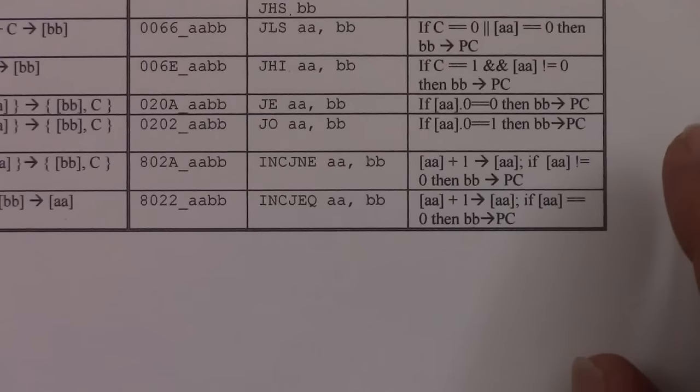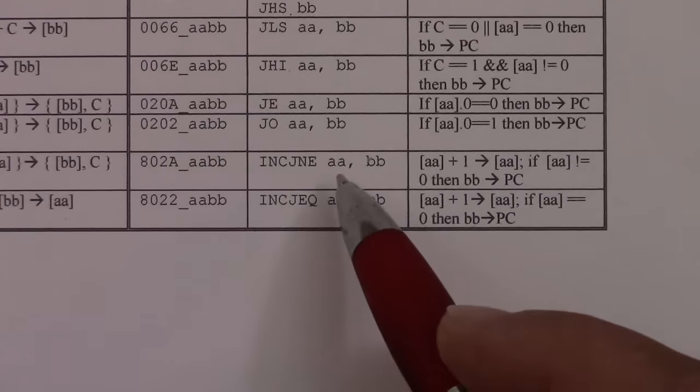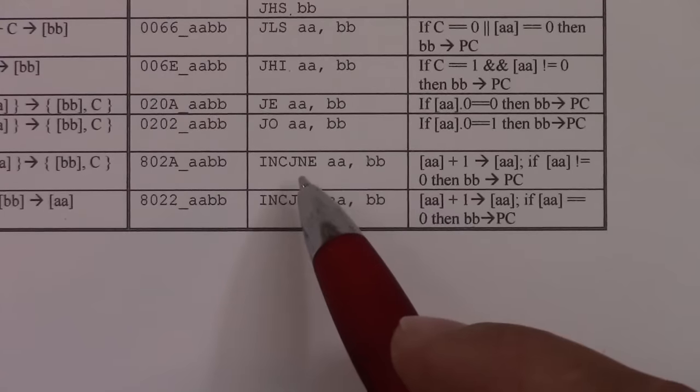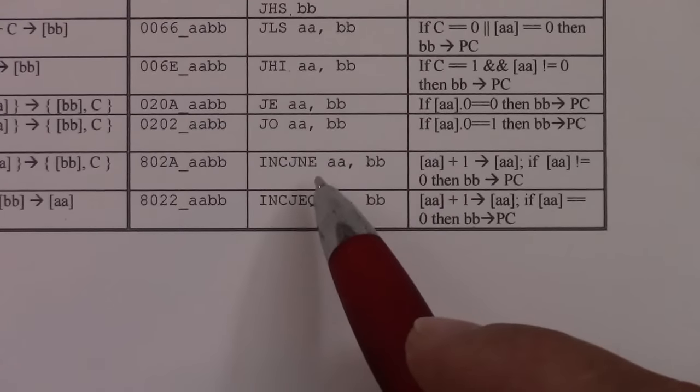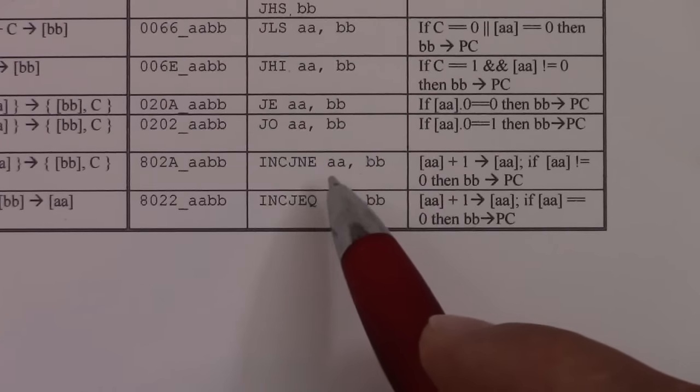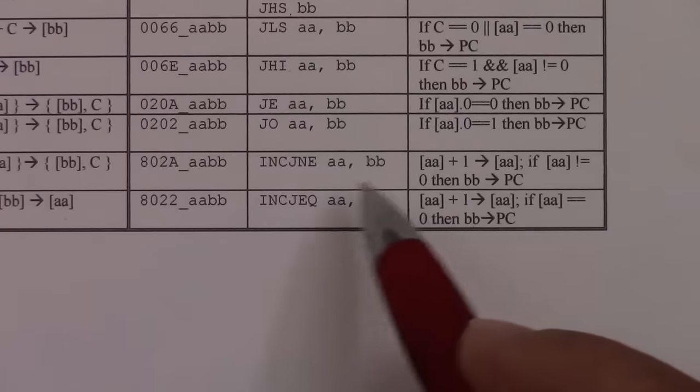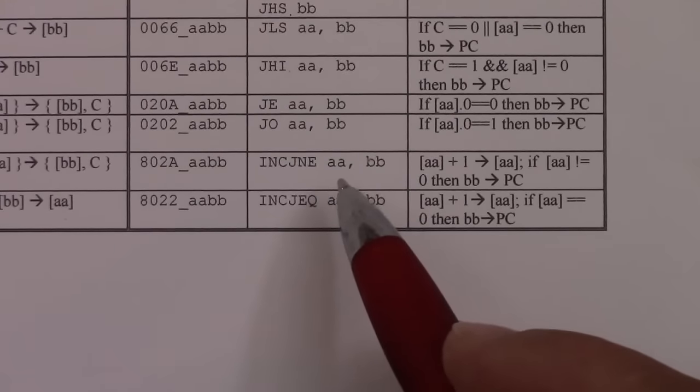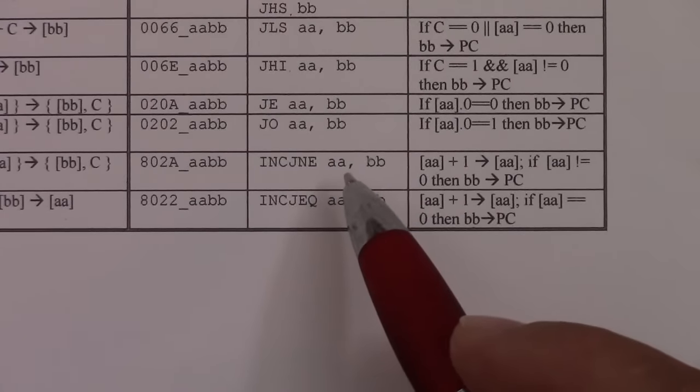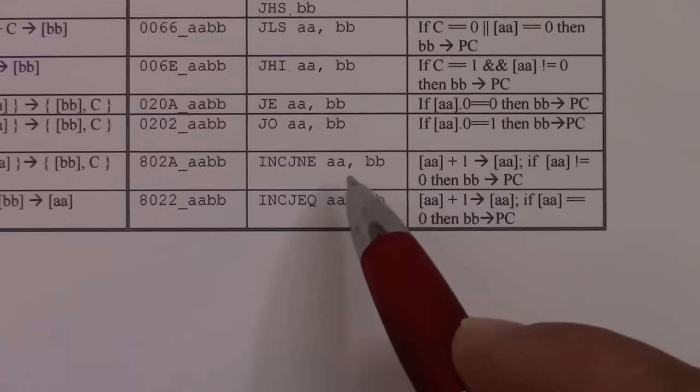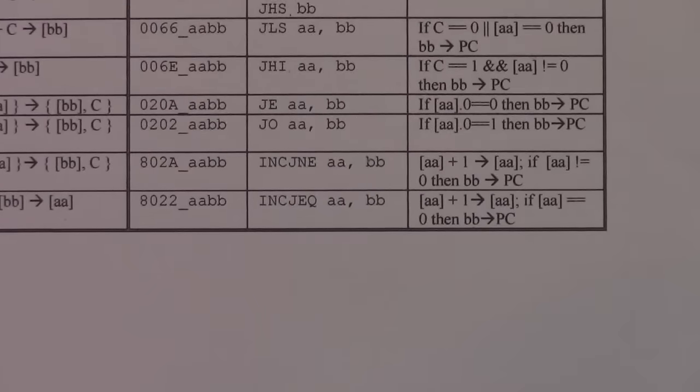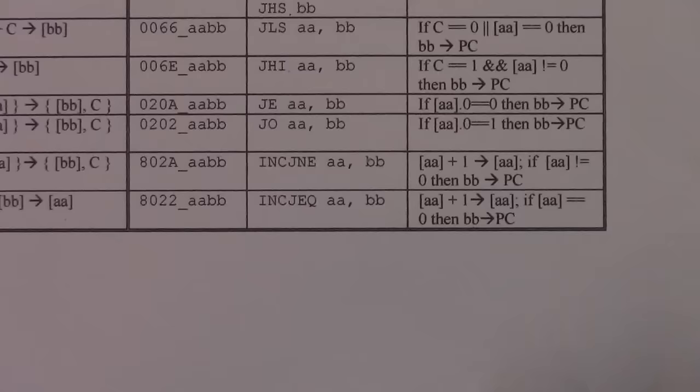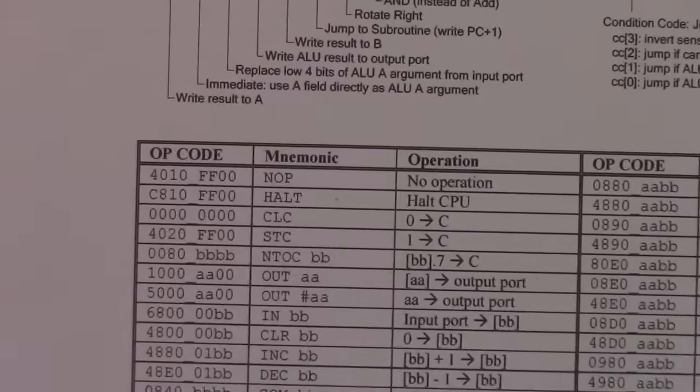Two more interesting instructions. There's increment and jump if the result is not equal to zero. So this is a way of making quick loops. You store the negative of the loop count into some memory location. Keep incrementing it. And as long as it doesn't hit zero, then loop. Now, so now we have all these instructions. Let's write up a program with them.